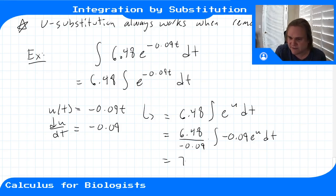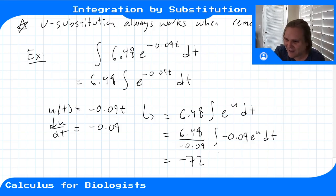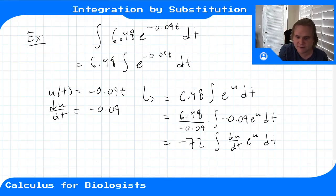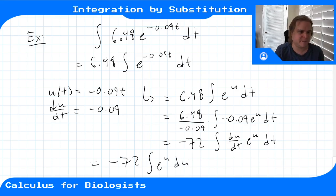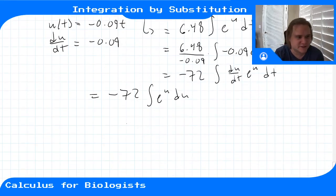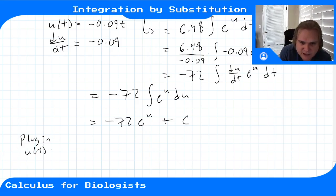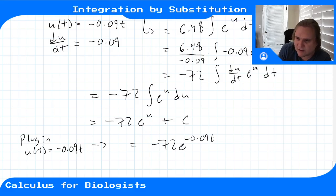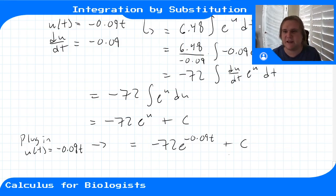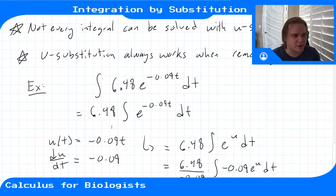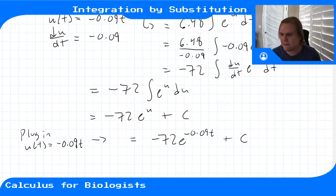This gives 6.48 divided by negative 0.09, times negative 0.09 e to the u dt. Now du/dt is sitting right there. Combining the constants gives negative 72, and then we have the integral of e to the u du. The anti-derivative of e to the u is just e to the u, so we get minus 72 e to the u plus C, and plugging back in u equals negative 0.09t gives the final answer: minus 72 e to the negative 0.09t plus C.